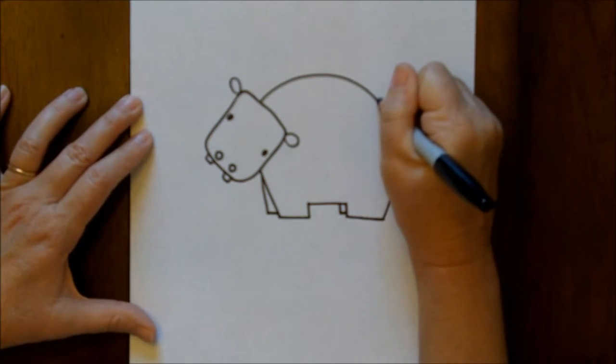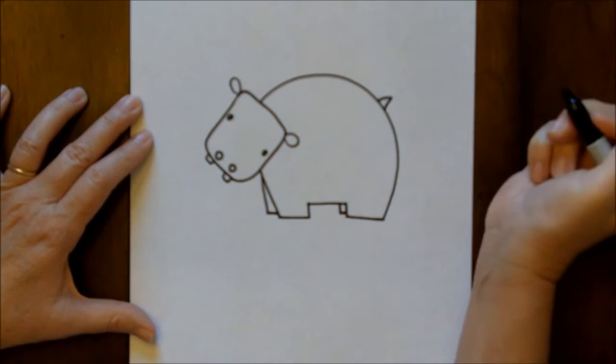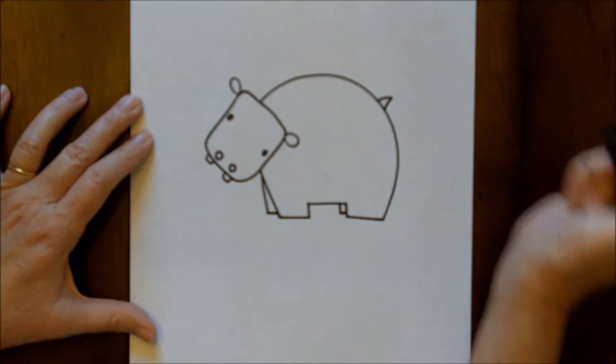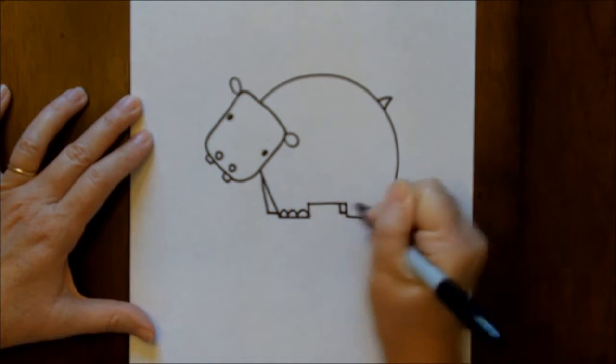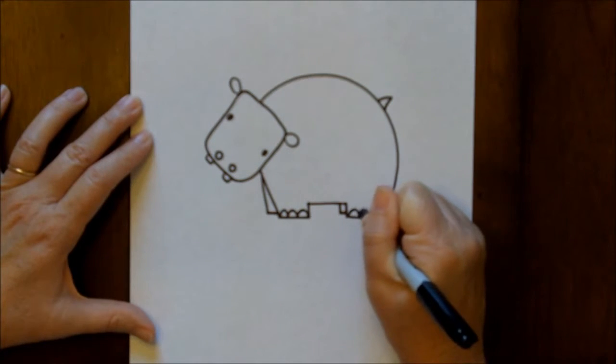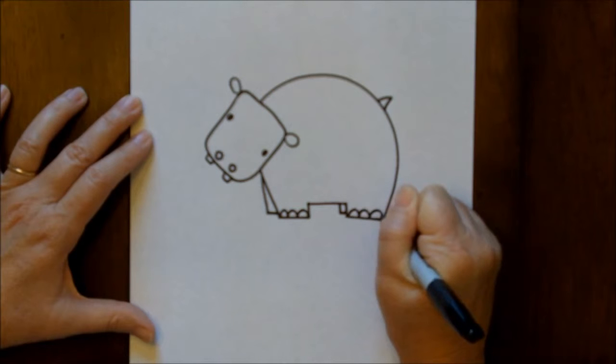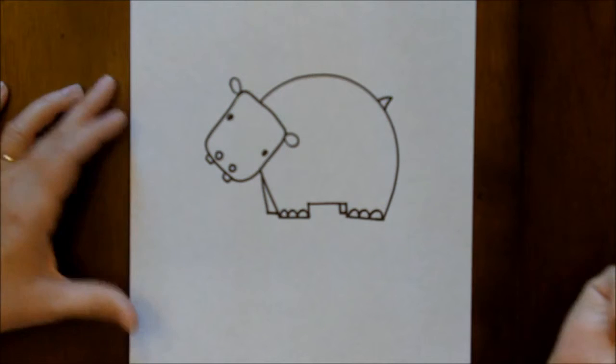I like to make a little tail on the back. A little angle. And then some toes. They have very large toes, so we'll put some kind of roundish, I'm sorry, curved lines there.